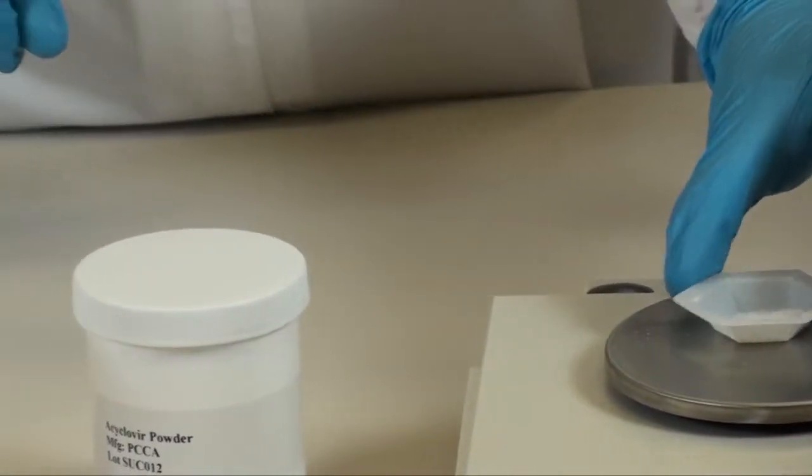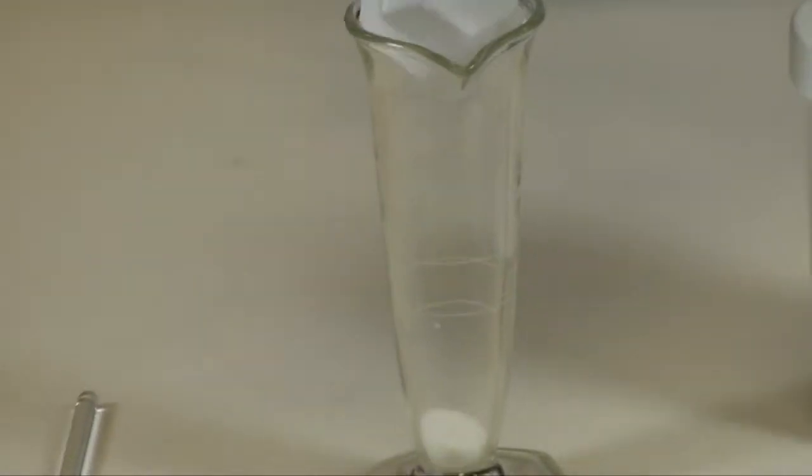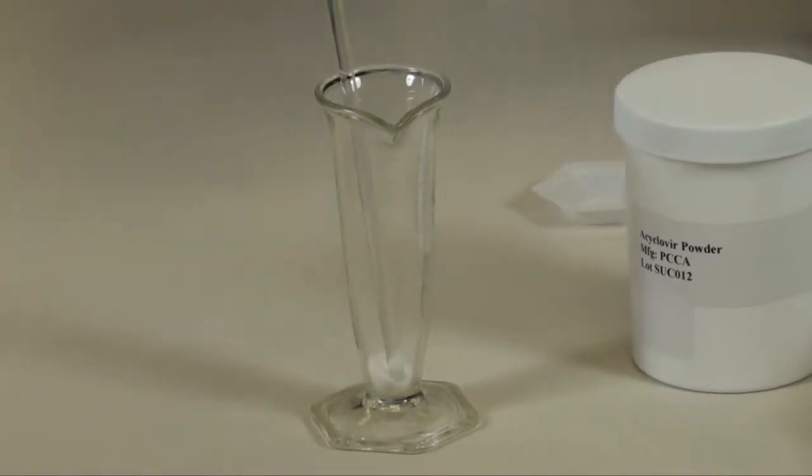Place the acyclovir powder into your one ounce graduated conical and place the glass stirring rod into the conical.